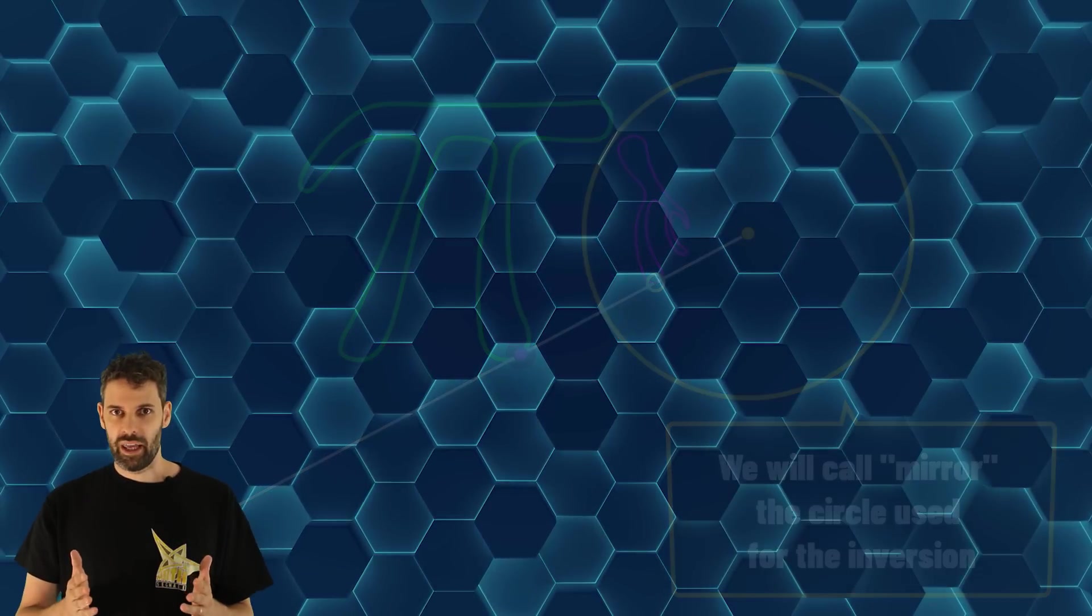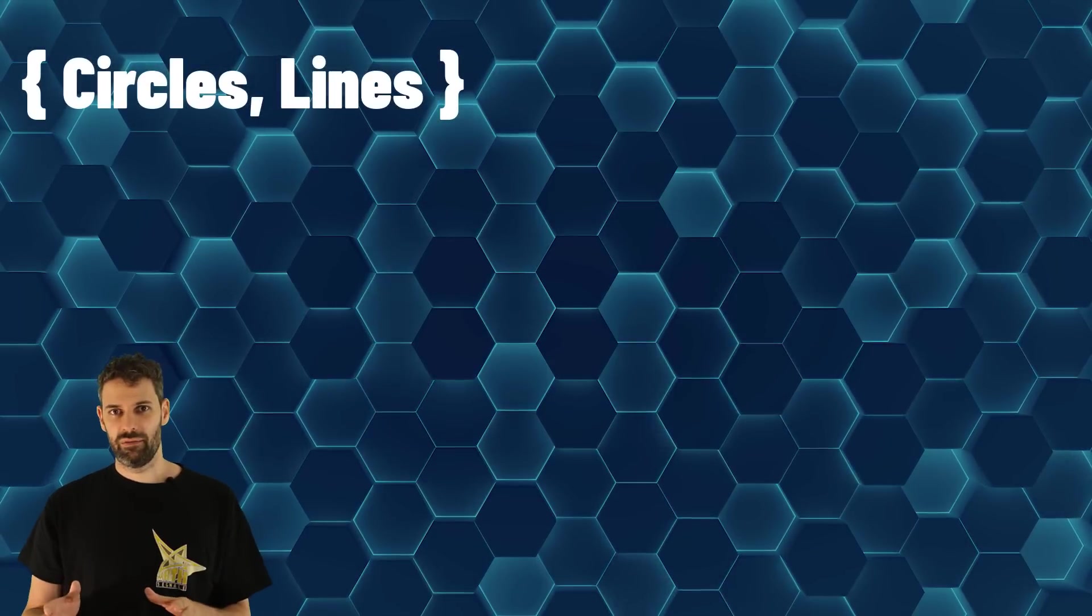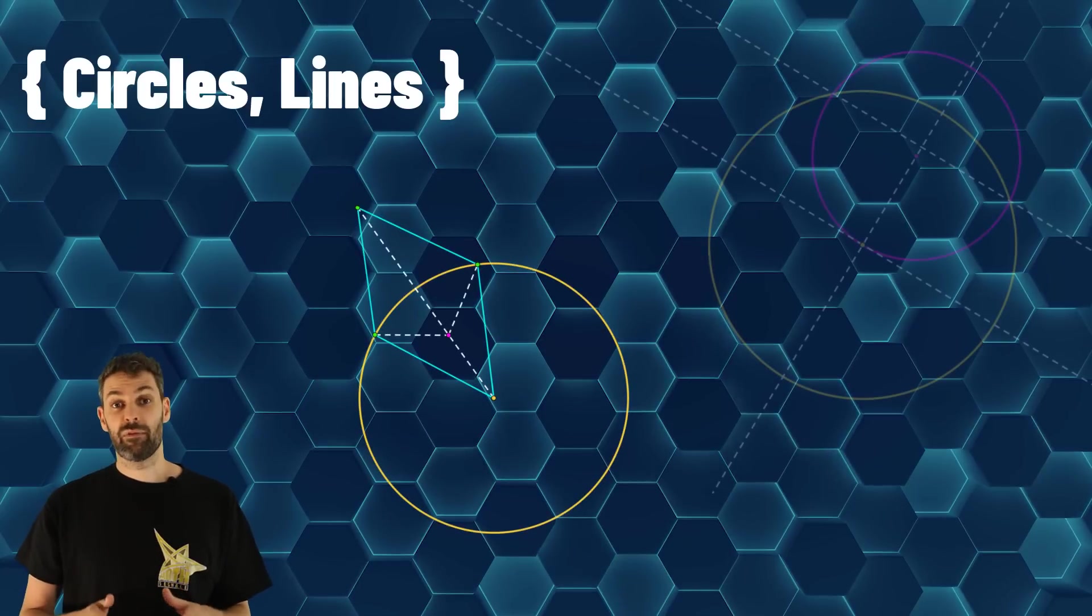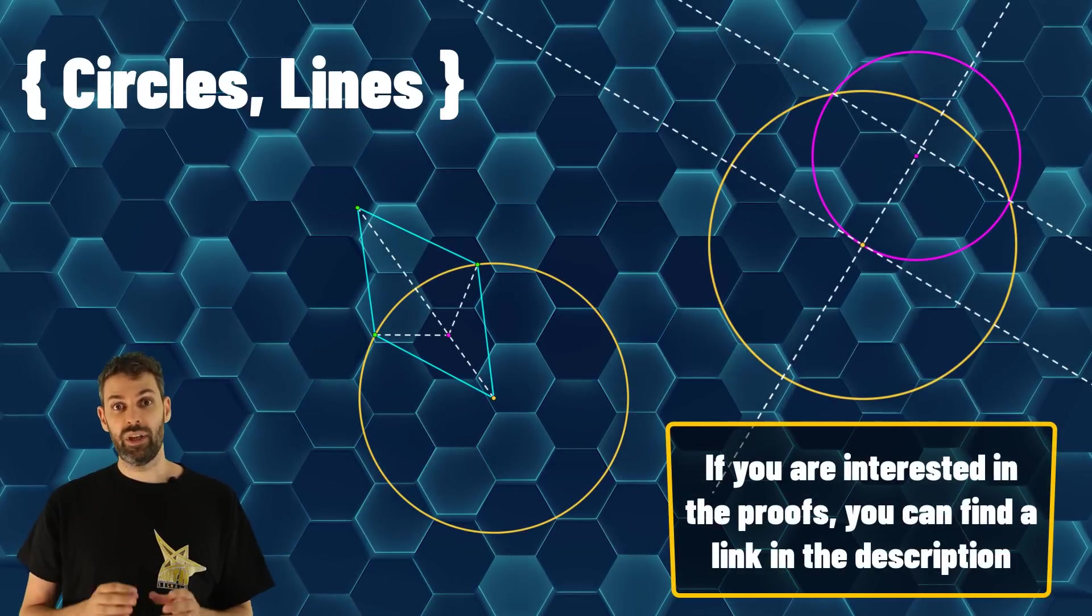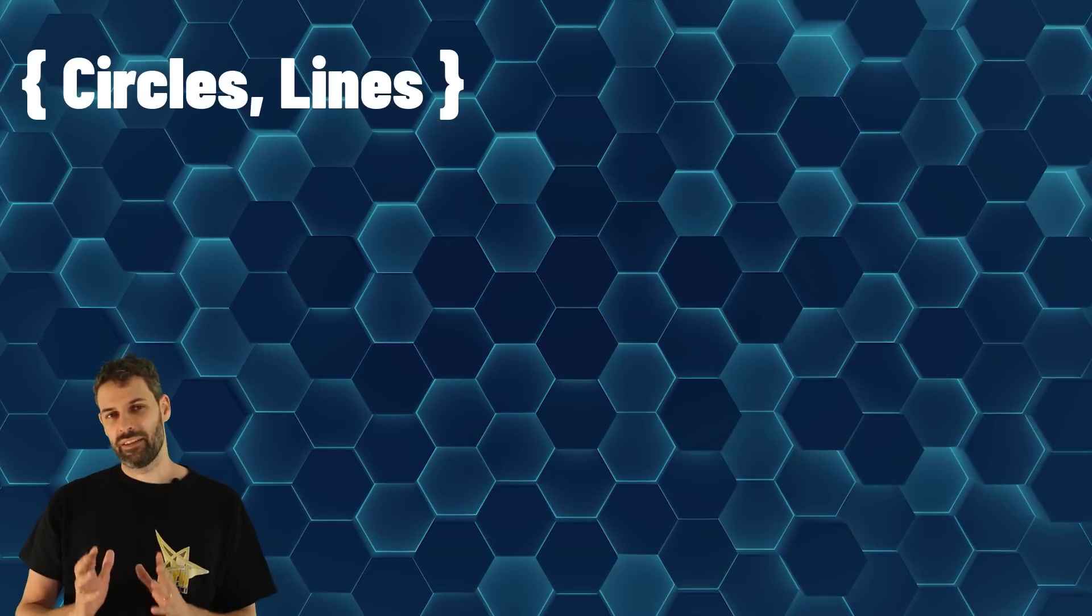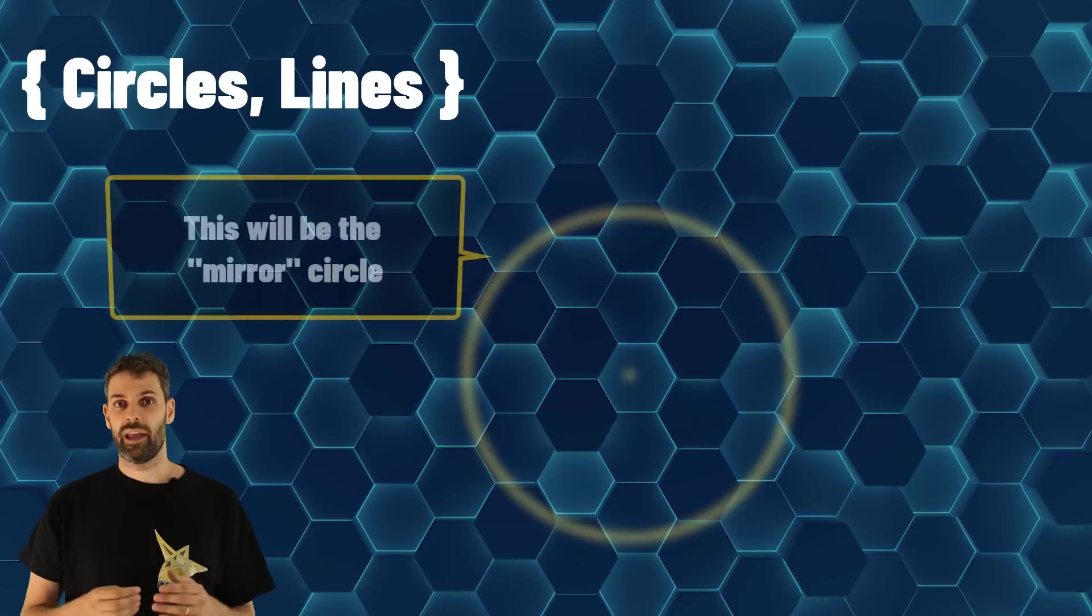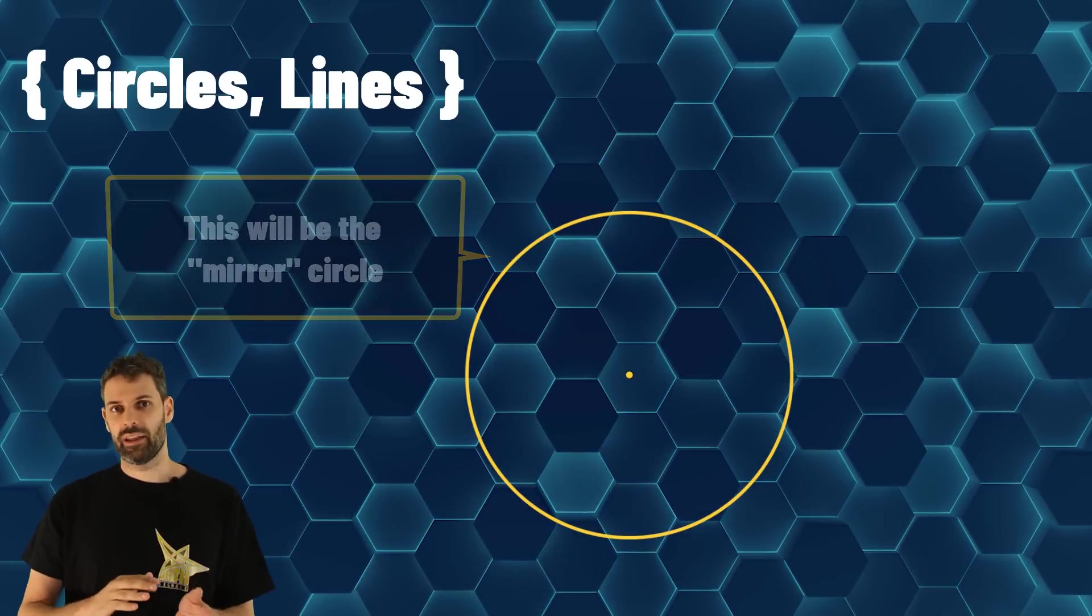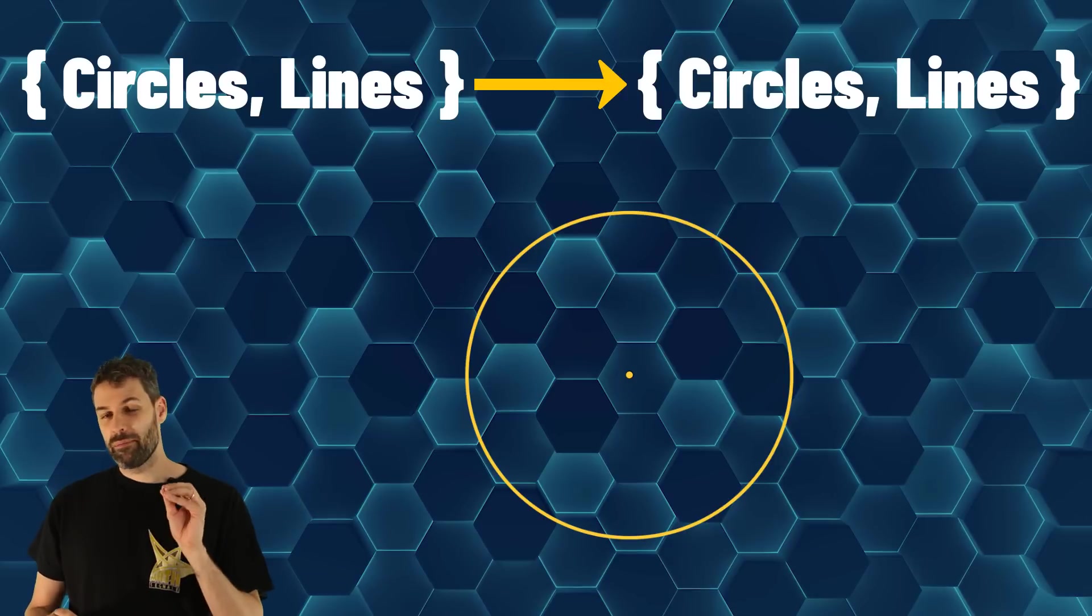For our aim, we are interested in transformation of circles and lines. All the following facts come from Euclidean geometry and we will leave you in the description a link with some proofs. It's not difficult to see that if you take a line or a circle and you transform it, you will get either a line or a circle. But we can be more precise.